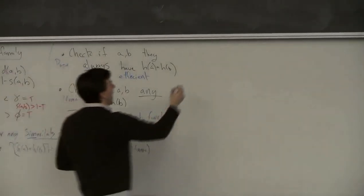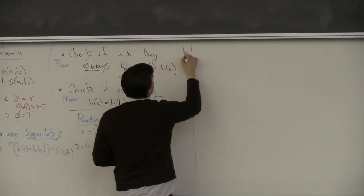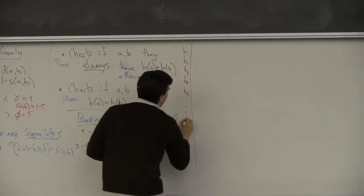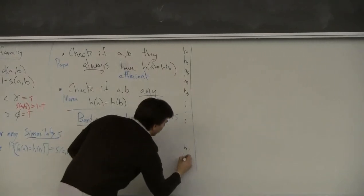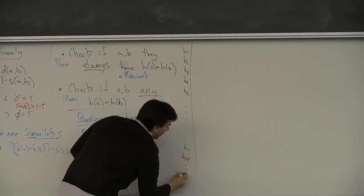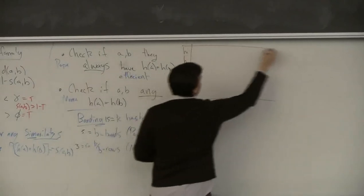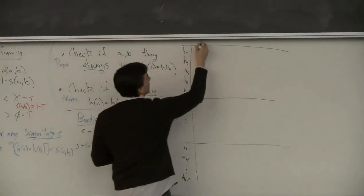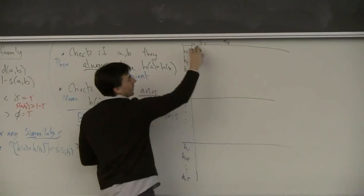For example, with K equal to 15, you set the number of bands to 5 and the number of rows to 3. You have hash functions H1, H2, H3, H4, H5, up to H15. Two sets are considered similar if everything matches within one of these bands of five hash functions.